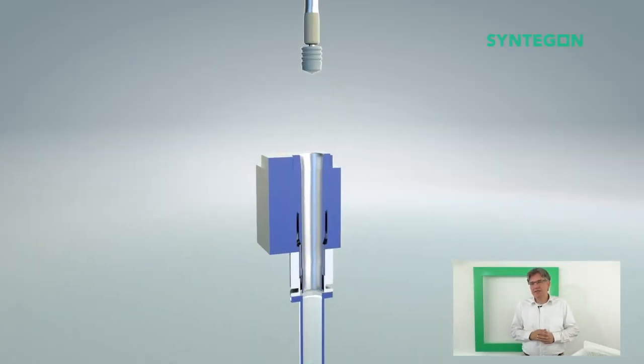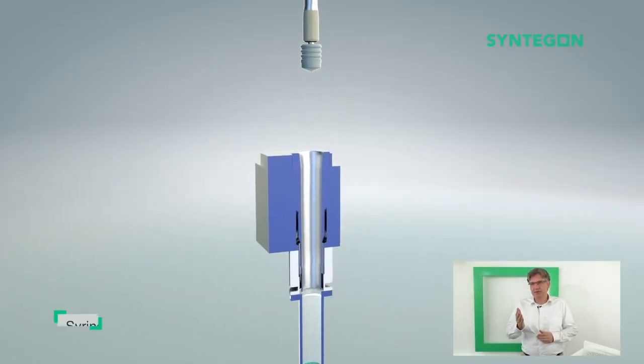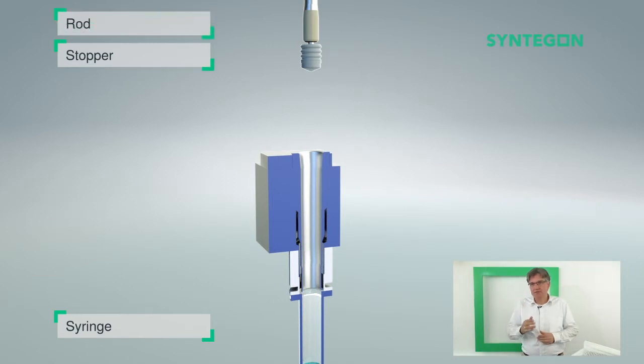Here you see the elements again: the syringe, the stopper, and the rod. And this time we have, instead of the vent tube, a vacuum chamber.